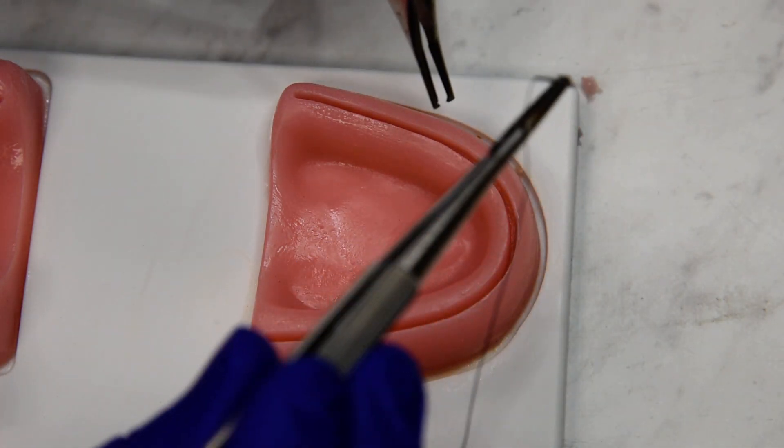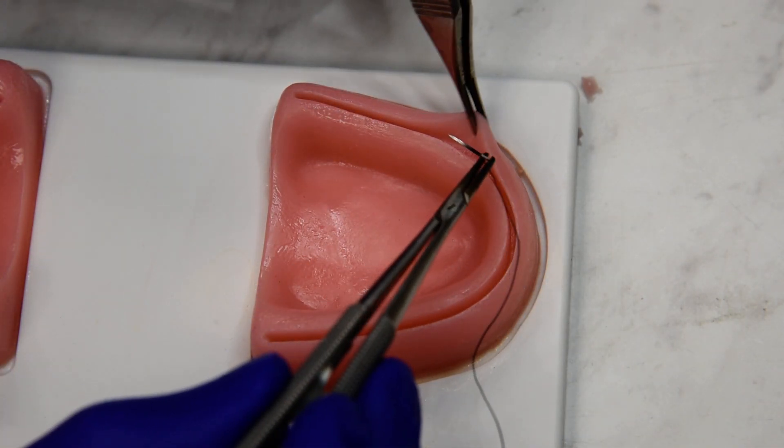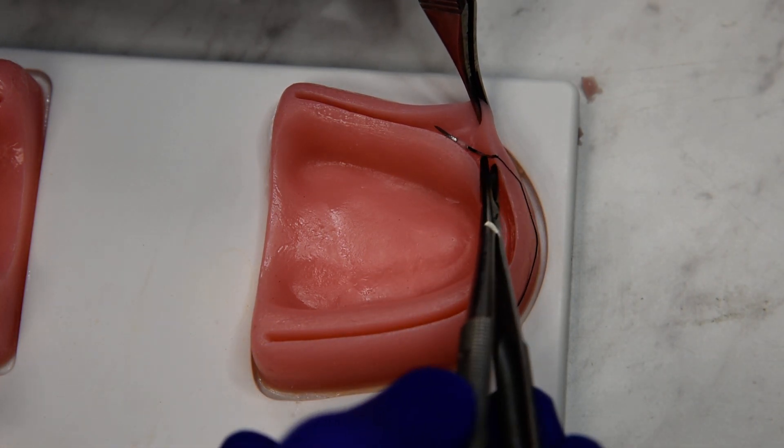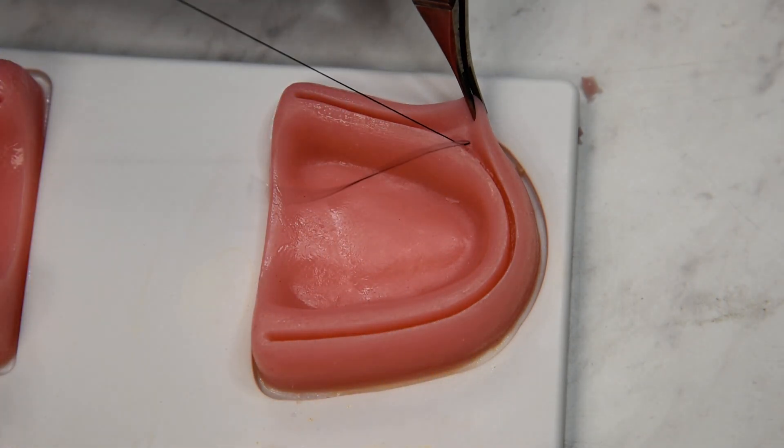So the first bite, often with Castro Viejos, is going to be parallel to the bone. So we're just biting periosteum, turning our wrists going back out, and then we'll get rid of some of the slack.